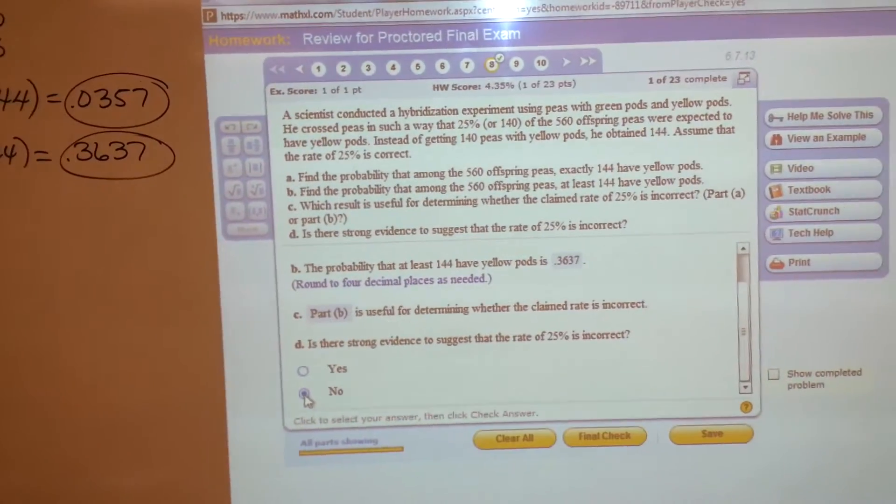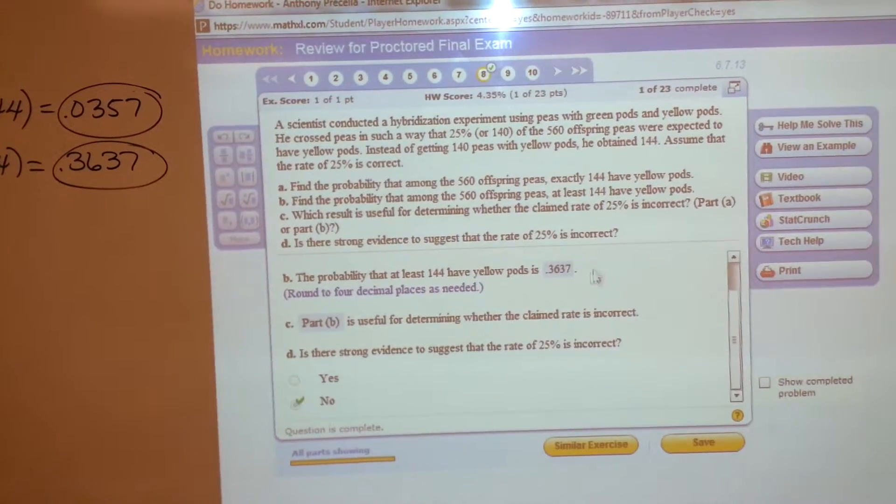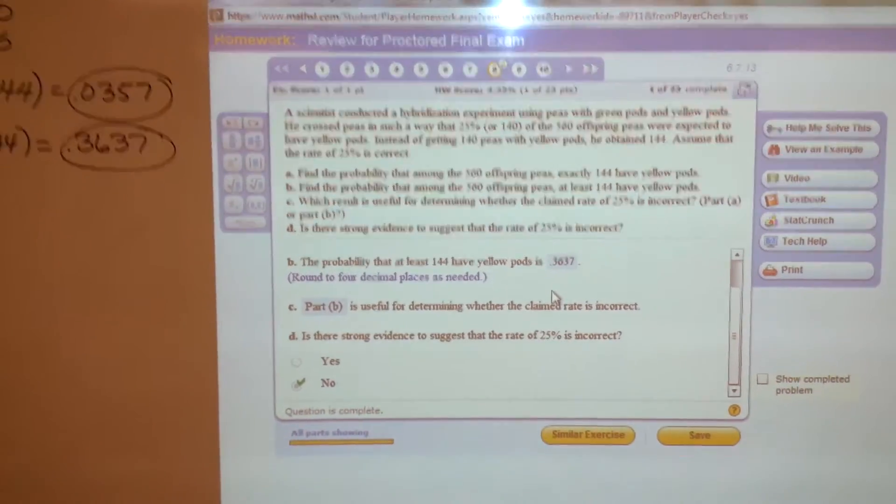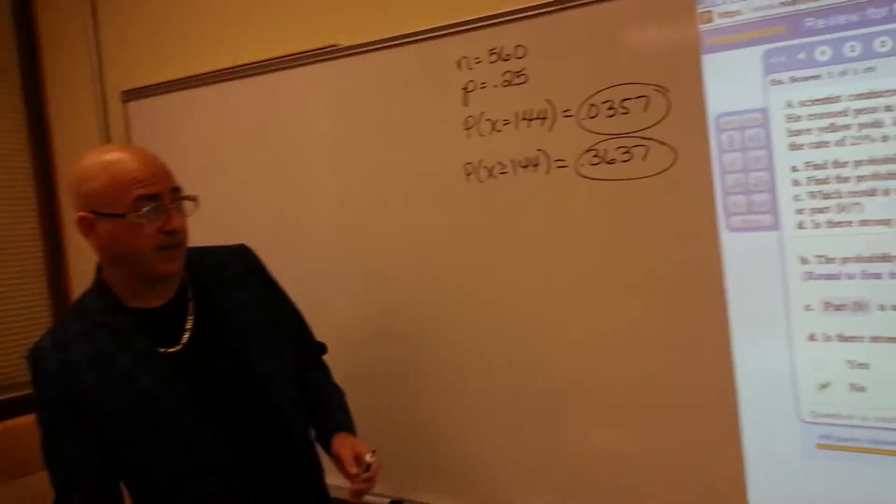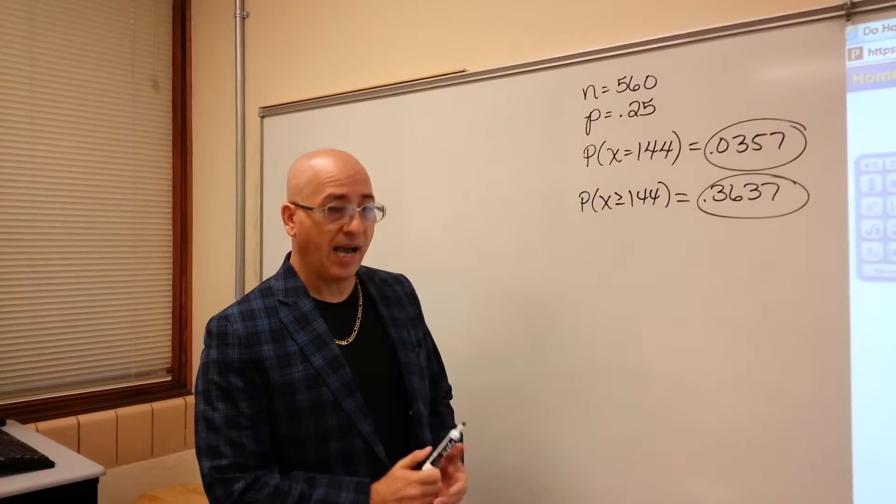So is there strong evidence? No. If B had been smaller than 5%, then okay, there would be strong evidence. So this was it. Just doing some binomials with StatCrunch.